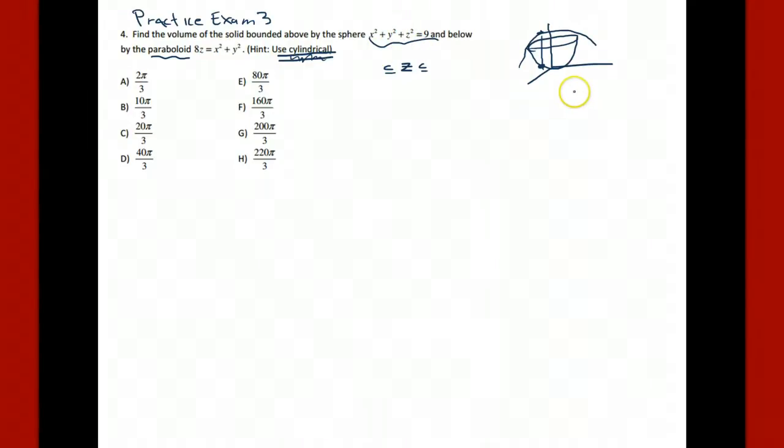Let's take the sphere equation. x squared plus y squared plus z squared equals 9. x squared plus y squared is r squared. So it's going to be that z squared is 9 minus r squared, or that z is the positive square root of that. The negative square root would be the lower hemisphere. So that's going to be the upper bound because it is the sphere.